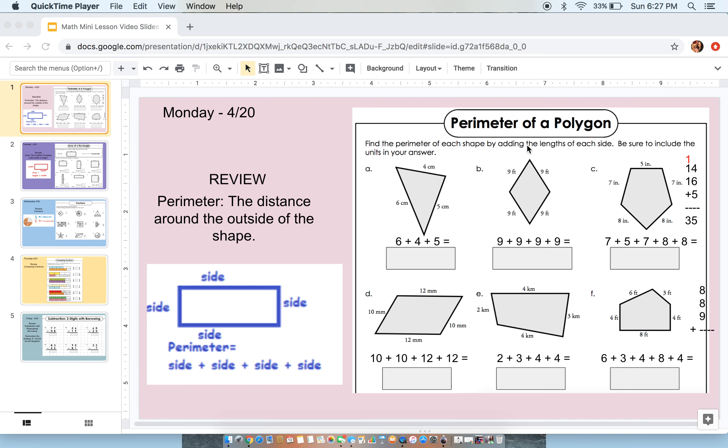So when we are working with perimeter of any shape, it's our job to add up all of the sides. Whether it's a polygon or if it's a rectangle or square, or if it's one of those different shapes that has more than four sides.